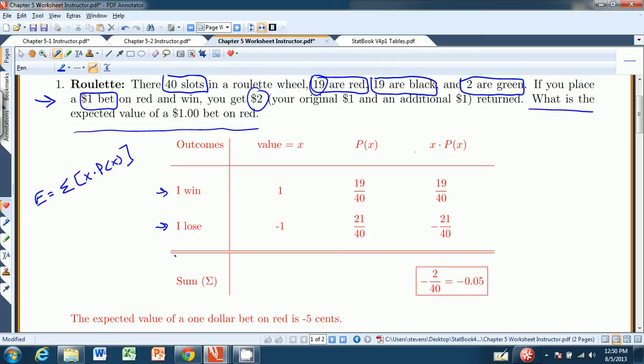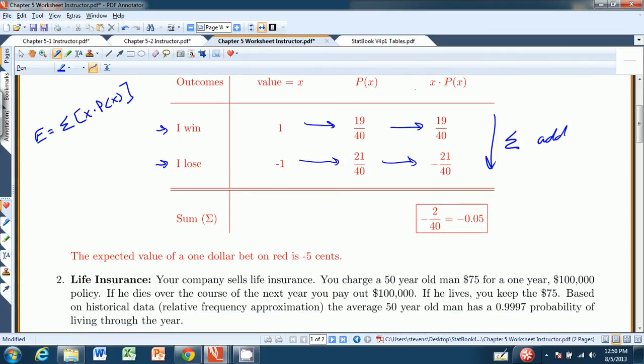This part right here is just the probability distribution. So I take x times p of x, I get 19 out of 40. x times p of x, I get negative 21 over 40. And when I add them up, that's a summation, I get negative 0.05. So the expected value is negative 5 cents, meaning if you play this game over and over, you can expect, on average, to lose a nickel per game, as long as you stay within the $1 betting arena.